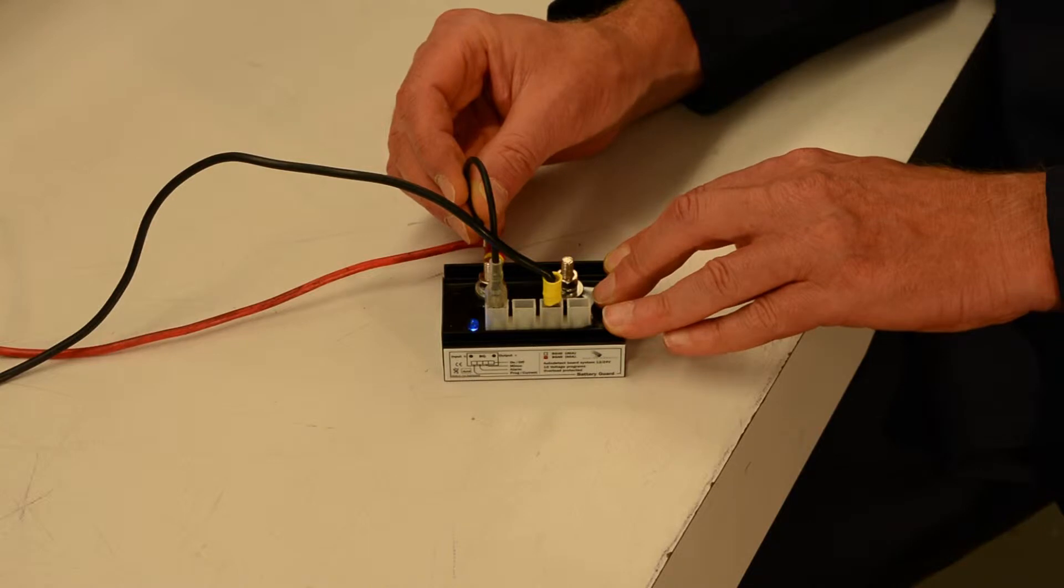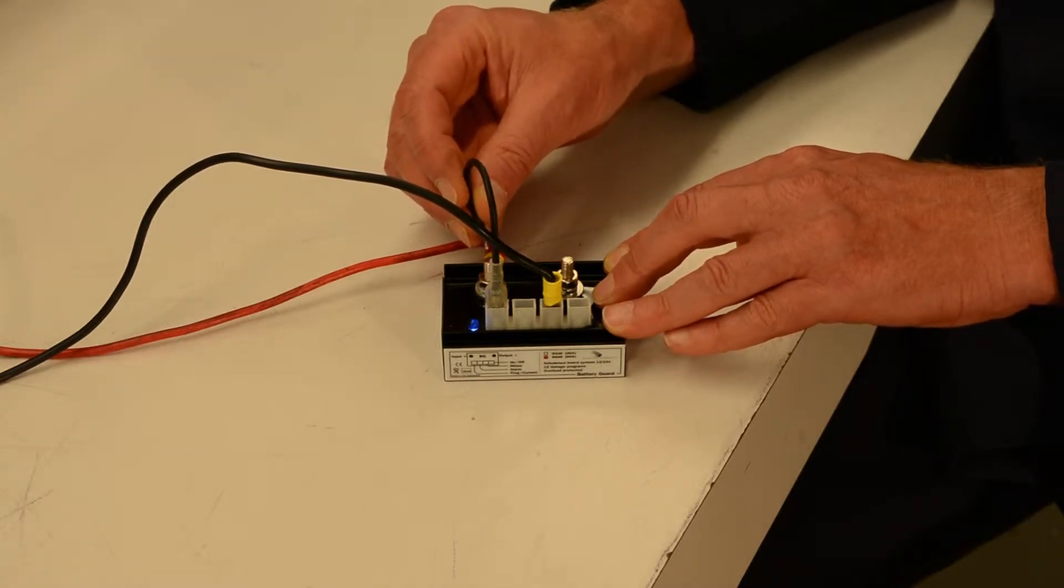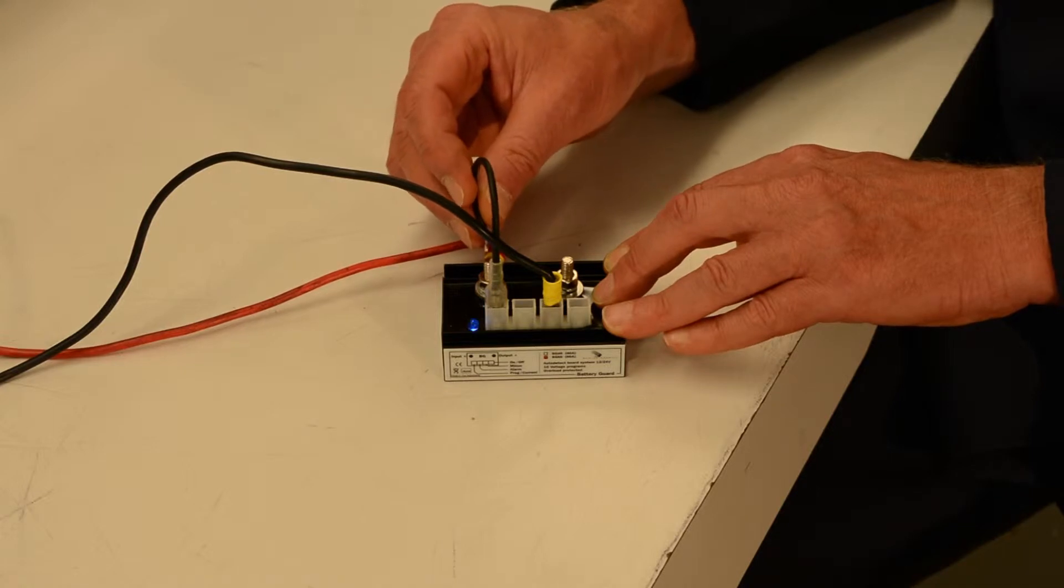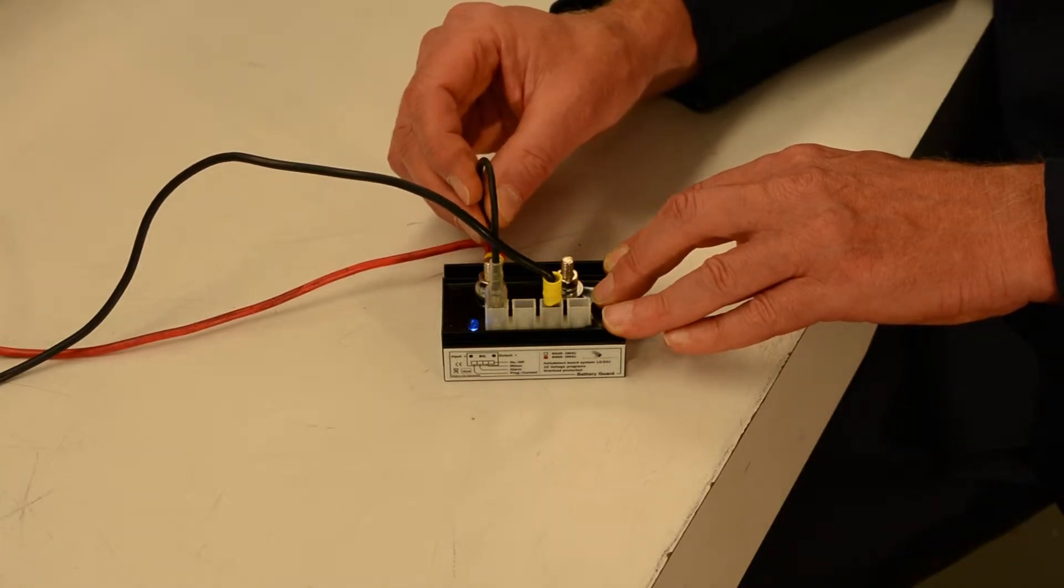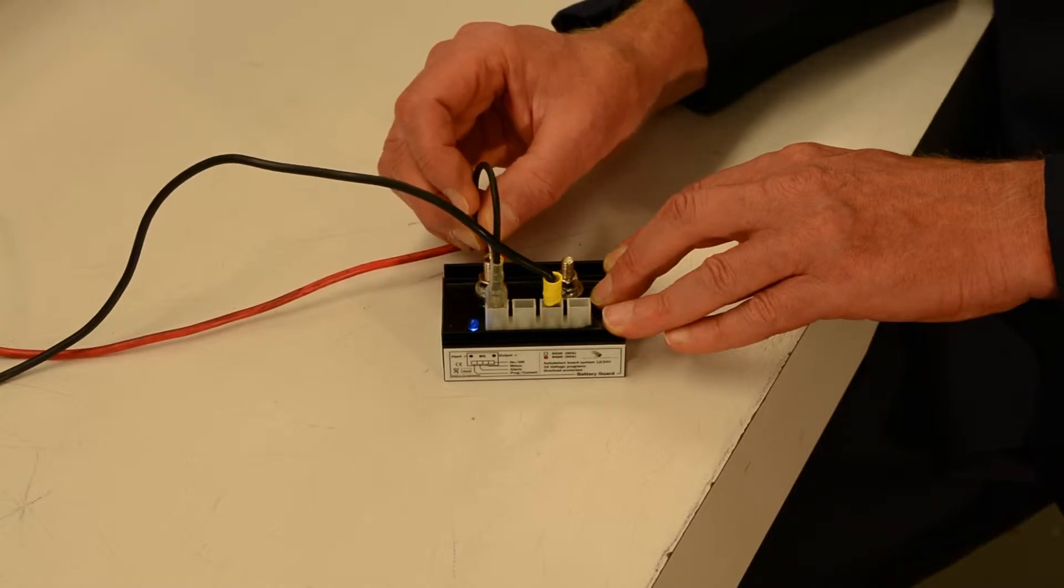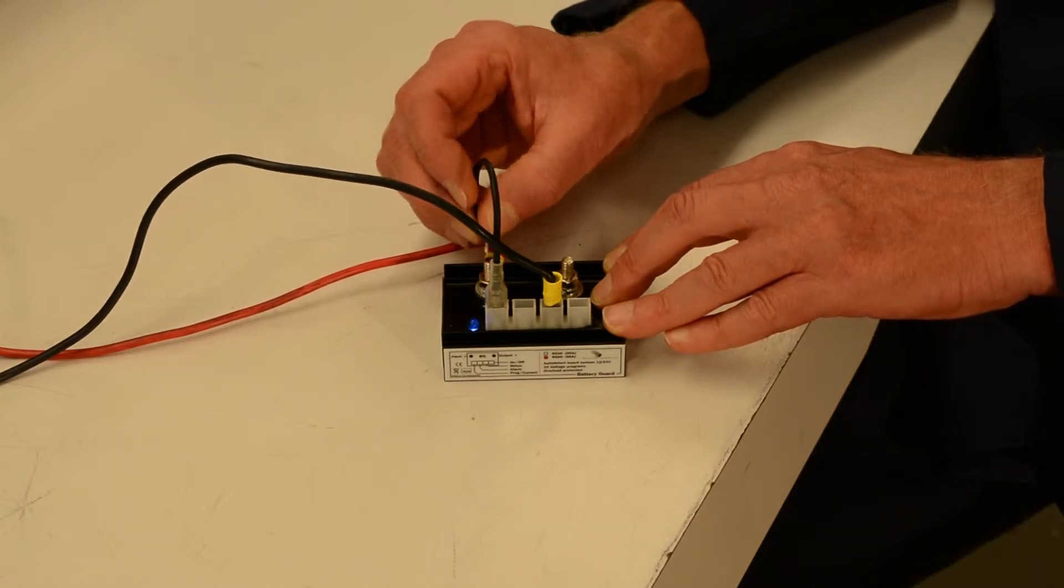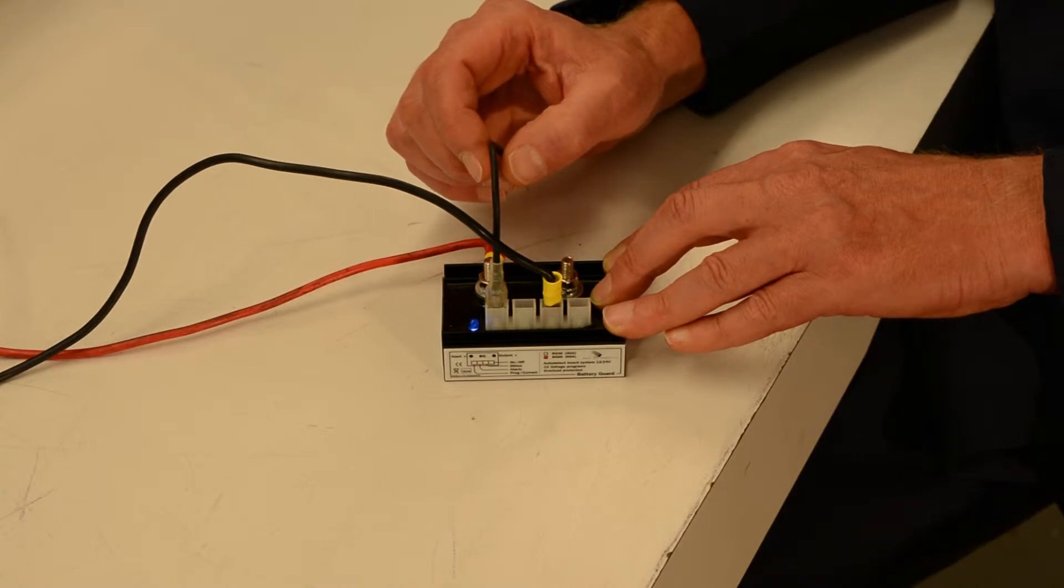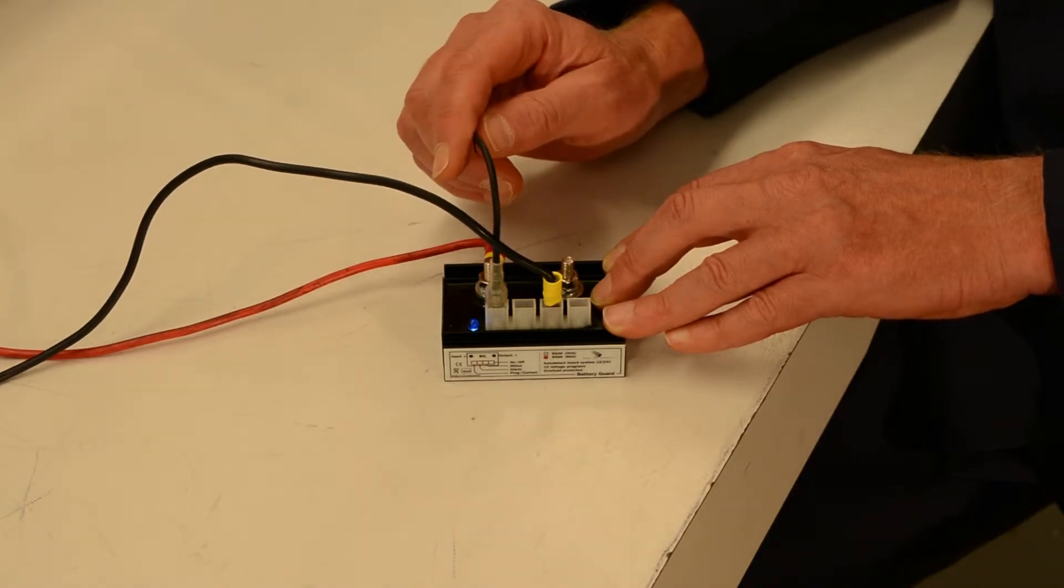And we'll select one of the 10 voltage programs to be used. So it's default program number one. So here's how you set program one. Hold it on there. The light blinks once. Remove it. It now confirms the program with one blink and then it turns back on again.